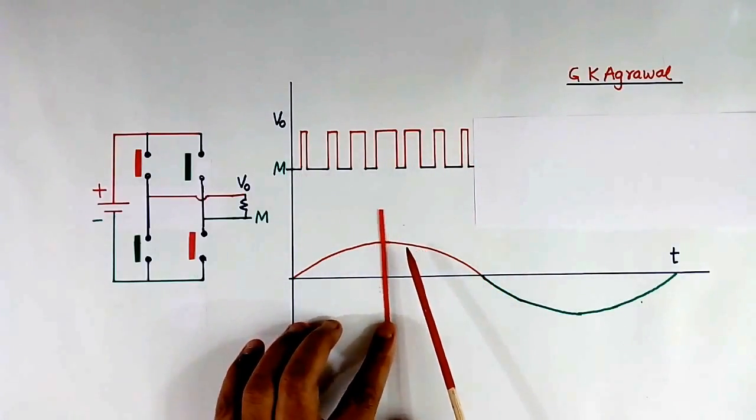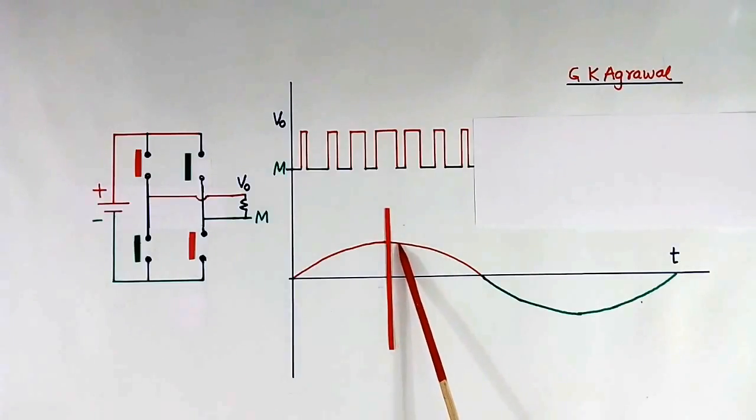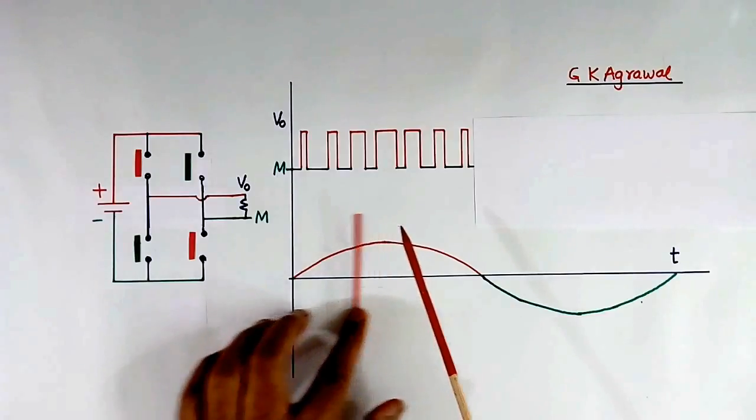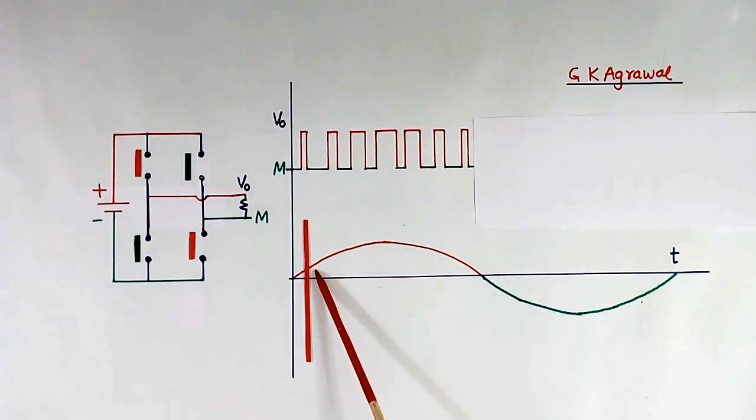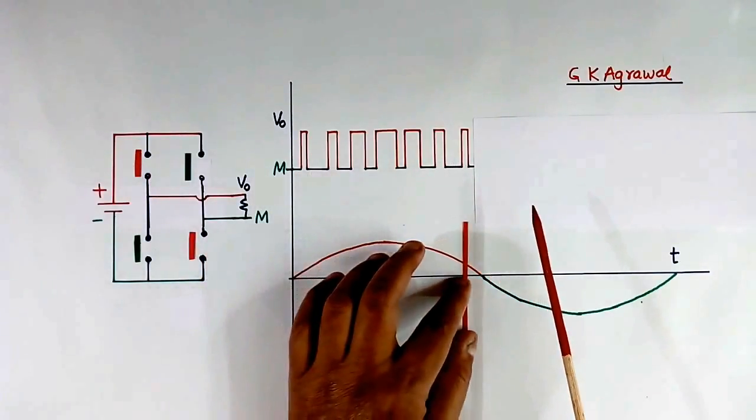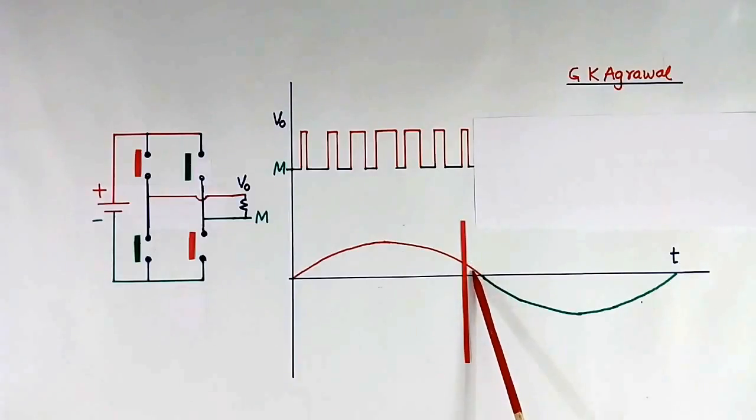Now here you see, at this point our voltage requirement is more, so we keep the switches ON for longer time, from here to here. At this point, voltage requirement is less, so we keep these switches ON for shorter time. Here also, voltage requirement is less, so ON period is less, OFF period is more.